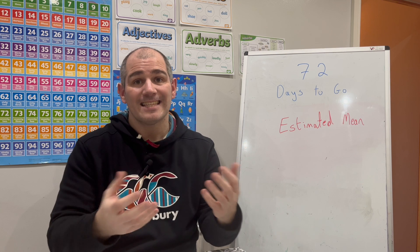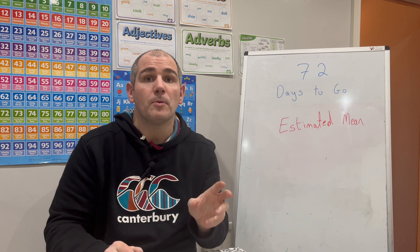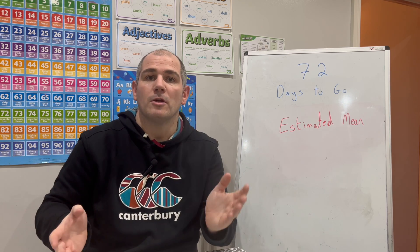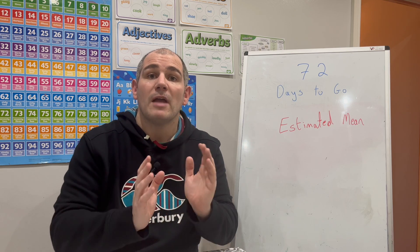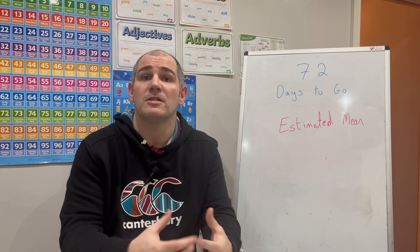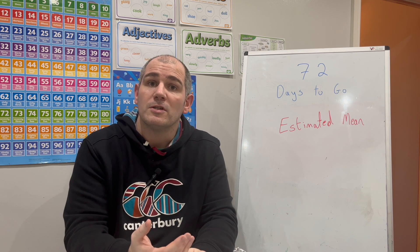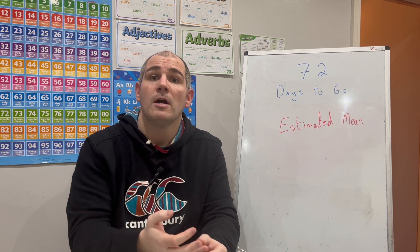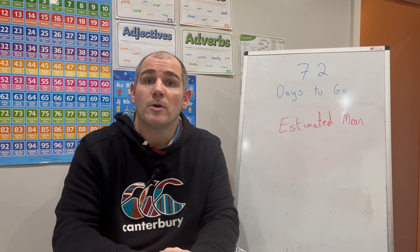Well done if you got that. In this video we've looked at how to find the estimated mean from a grouped frequency table. We use the midpoints of each category, multiply those by the frequencies to get the FX column, add those up to get the estimated total, then divide by the total frequency to get the estimated mean. I really hope you found this video useful - please like it and subscribe. Check out Corbettmaths for revision checklists, practice papers, and other resources including the ultimate higher revision video. Thanks so much for watching and I'll see you tomorrow at three o'clock!